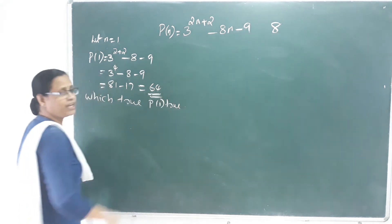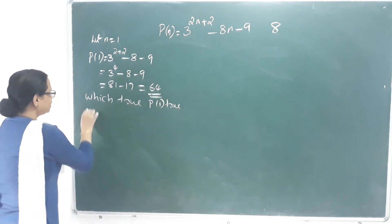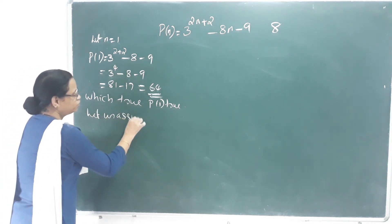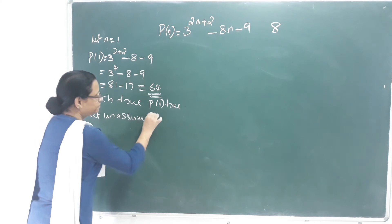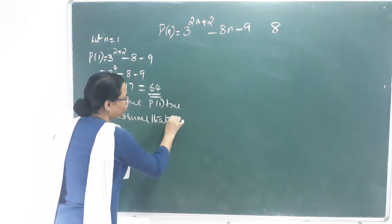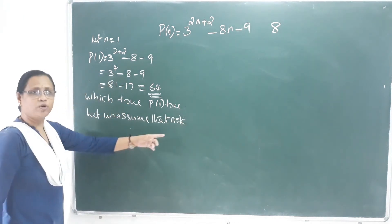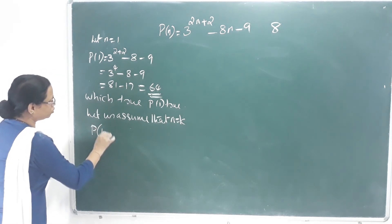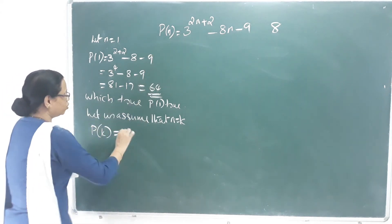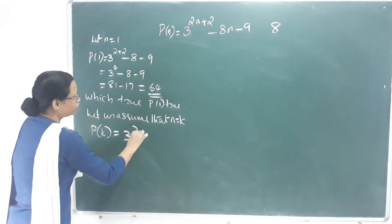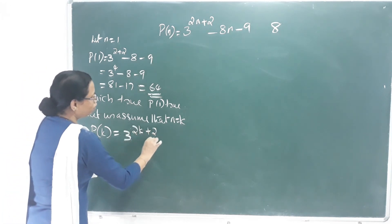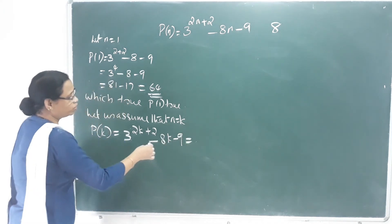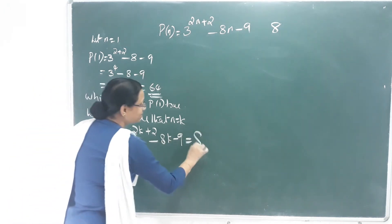Let us assume that n equal to k. P of k is equal to 3 raised to 2k plus 2 minus 8k minus 9, which is divisible by 8. This is the leading step.